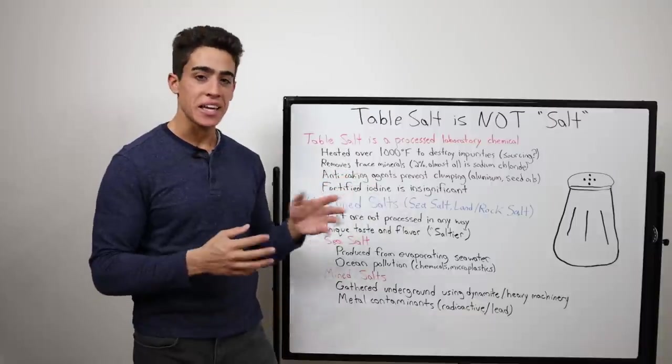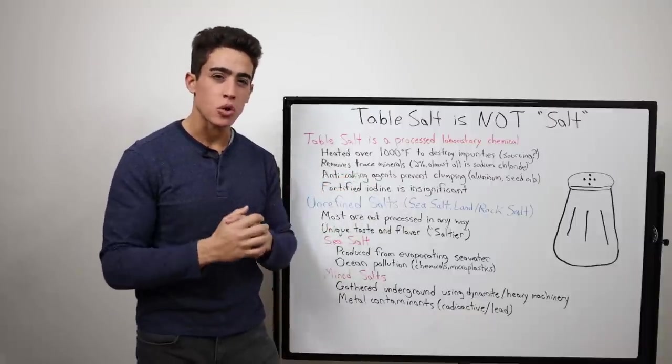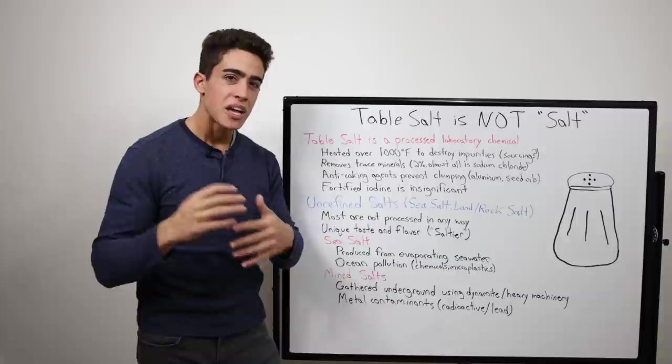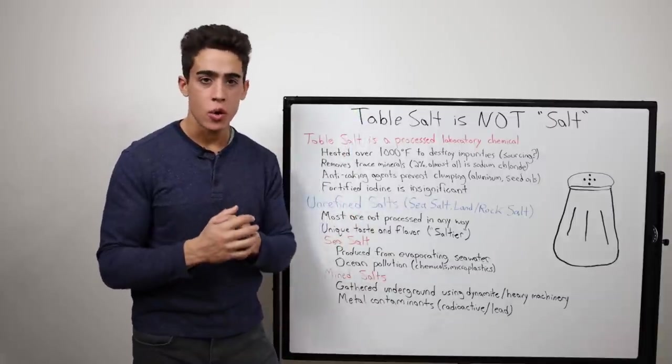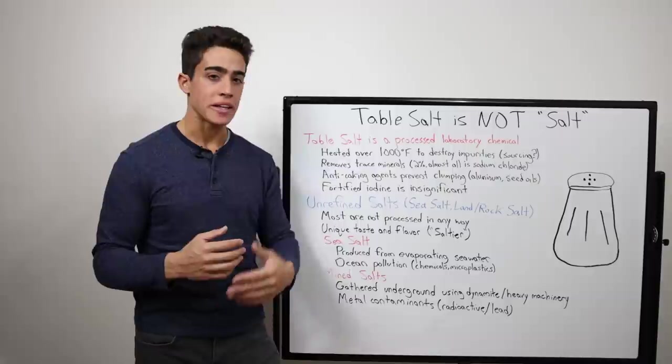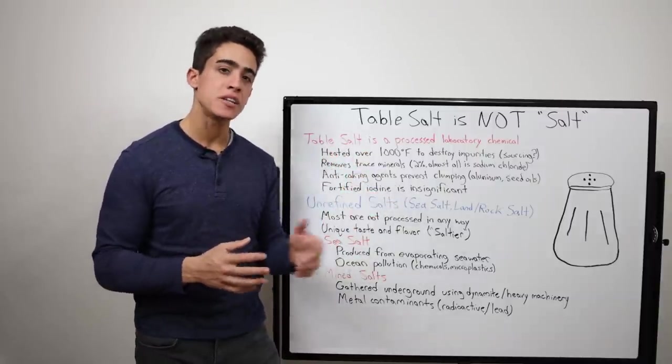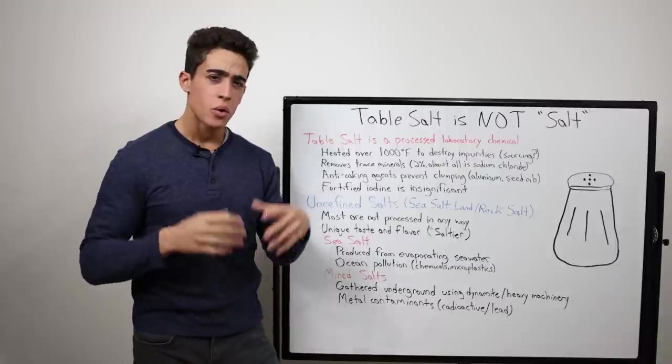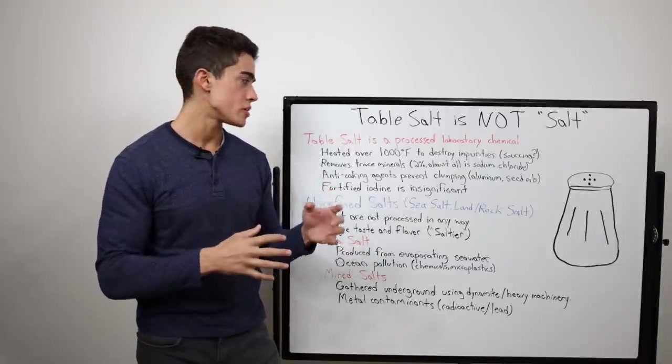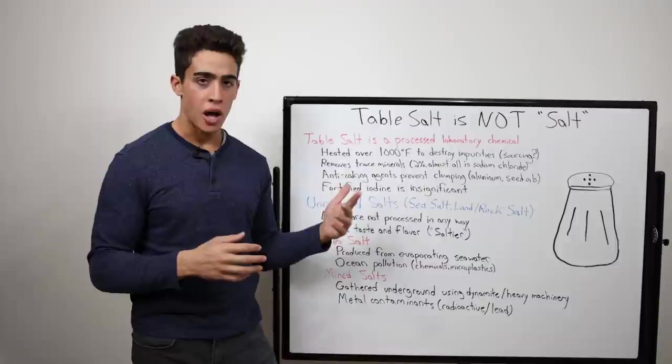Then anti-caking agents are added to prevent the salt from clumping together. Some of these contain aluminum, which we did a video on, highly toxic to the body, especially the brain. Another example of an anti-caking agent is magnesium stearate, which is made of inflammatory seed oils. I think typically palm oil.